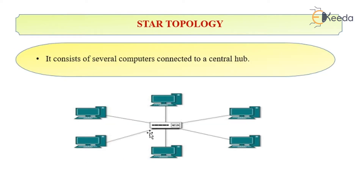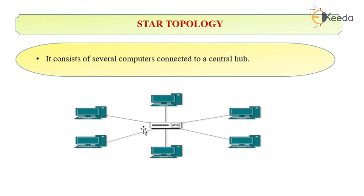Star topology. It consists of several computers connected to a central hub. The problem here is if the central computer or central hub fails, the entire topology will fail. So all the networks are designed in such a fashion that they ensure the working and the sustainability of the central hub. This is the most commonly and widely used topology.